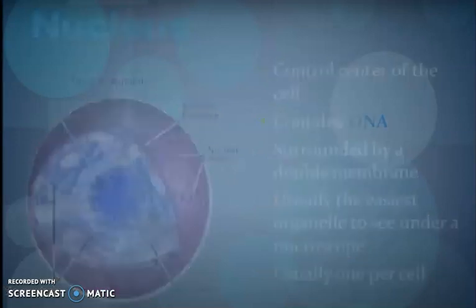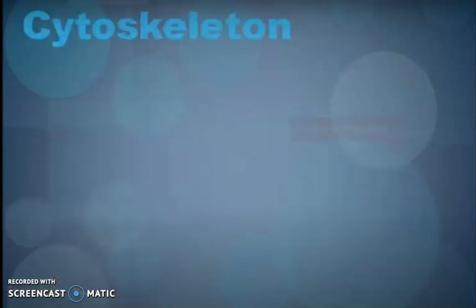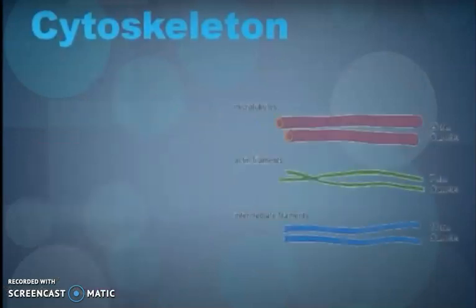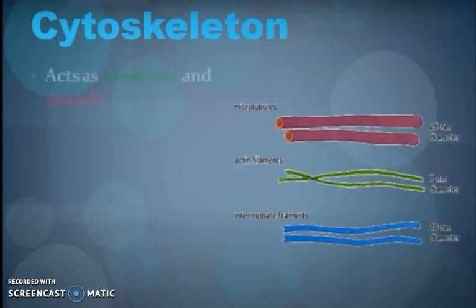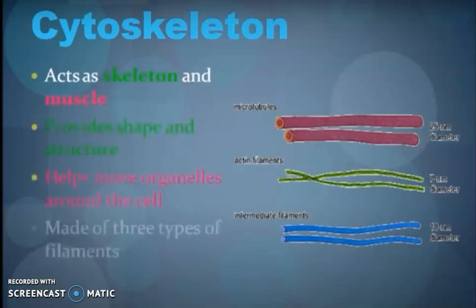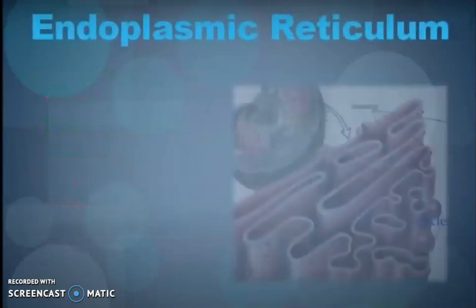Usually one nucleus is present per cell. The cytoskeleton acts as the skeleton and muscles of the cell. It provides shape and structure, helps move cell organelles, and is composed of three types of filaments.